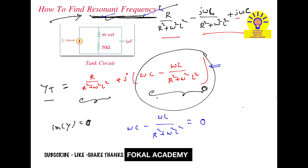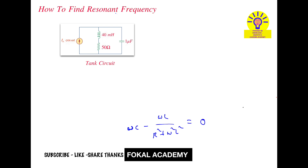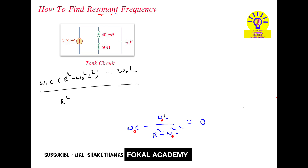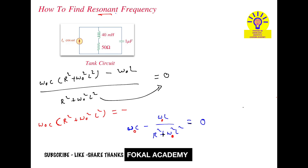Let the resonant frequency be ω₀. Setting the imaginary part to zero and multiplying through by (R² + ω₀²L²), we get: ω₀C(R² + ω₀²L²) − ω₀L = 0. Expanding: ω₀CR² + ω₀³CL² − ω₀L = 0. Bringing ω₀L to the right-hand side: ω₀CR² + ω₀³CL² = ω₀L.